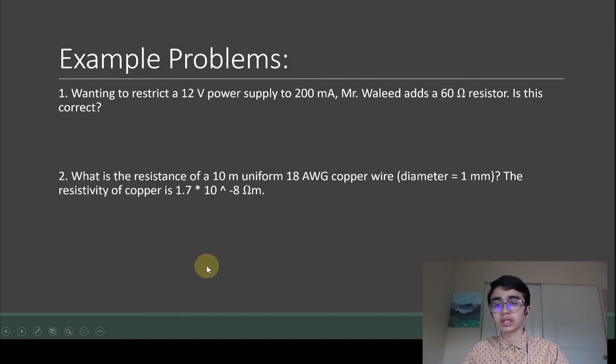The second question is: what is the resistance of a 10 meter uniform 18 gauge copper wire, assuming that 18 gauge wire's diameter is 1 millimeter and that the resistivity of copper is 1.7 times 10 to the minus 8 ohm meters? Here we have a few seconds to pause.